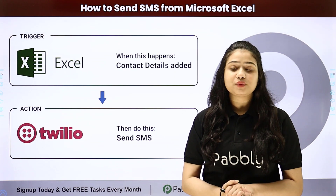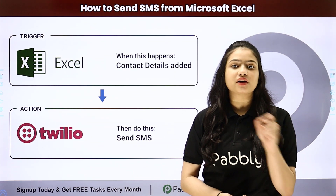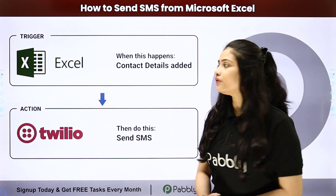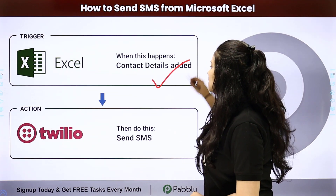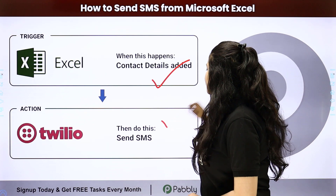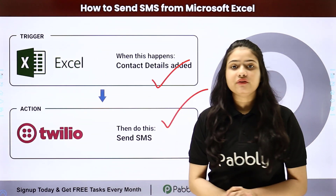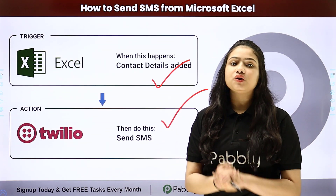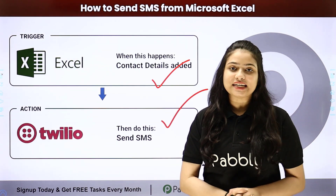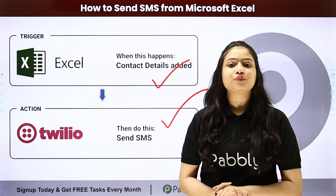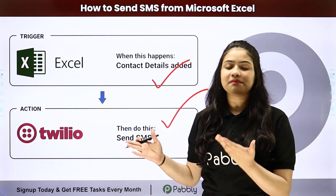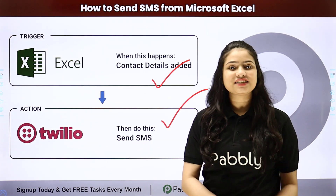Pabbly Connect runs on two principles: trigger and action. Here we are going to take Microsoft Excel as our trigger and Twilio as our action, and we will connect both of them to automate this entire process. To learn the entire automation step by step, let me take you to my screen.